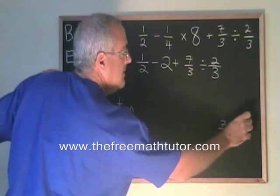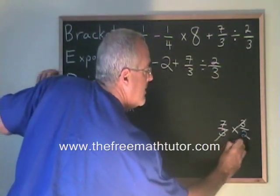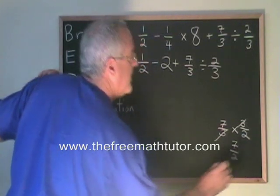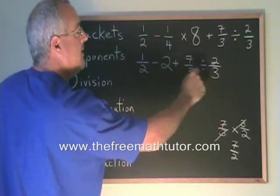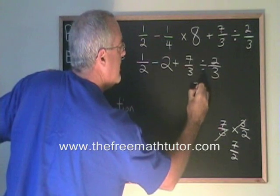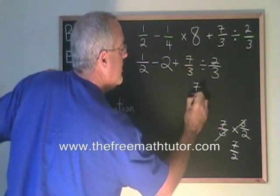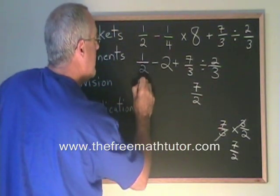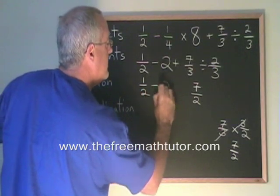And then if I cancel, I end up with an answer of 7/2. So the answer to that division is 7/2 and gets written in place of that division on the next line. Everything else is copied down.